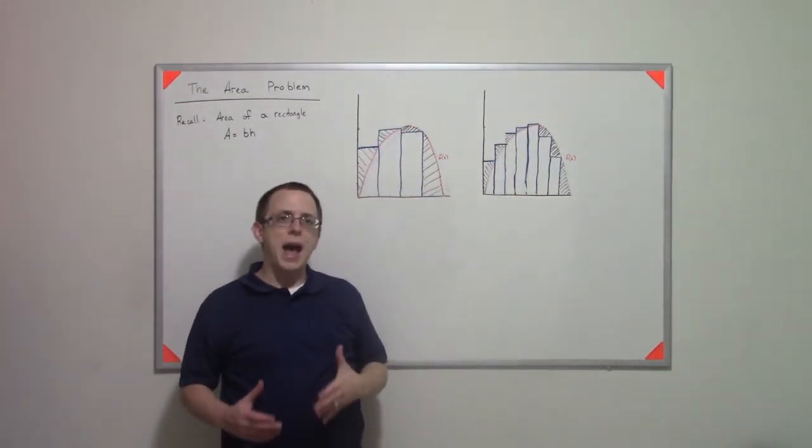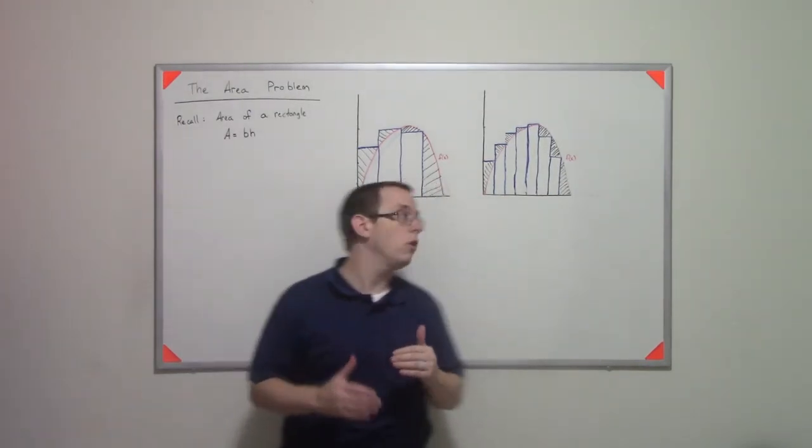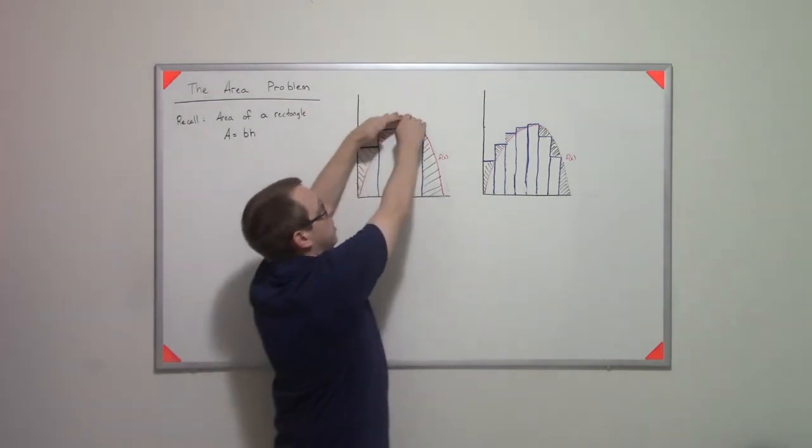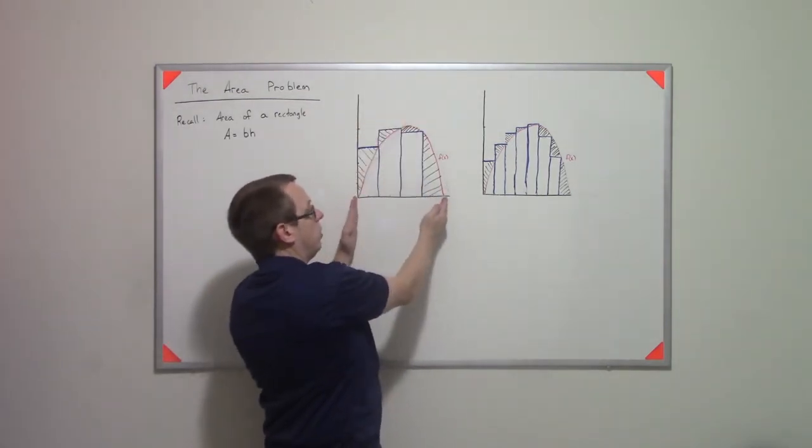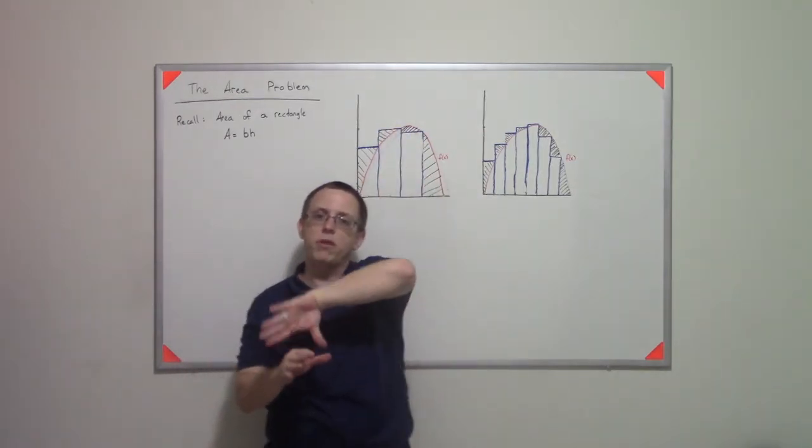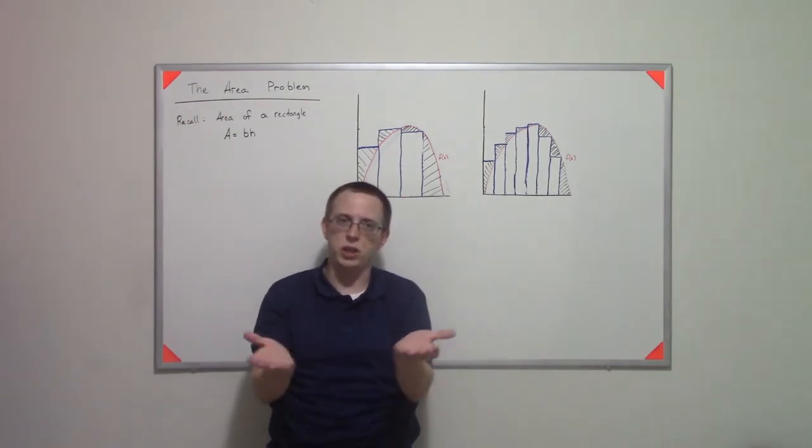And I might want to ask myself, well, how do I get the area of that function, or at least the area between the x-axis and the function within the points where it goes up and comes down? So I want to figure out all the area that's in that region that's carved out.